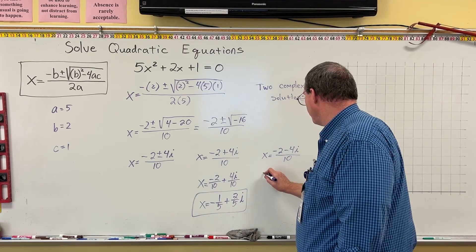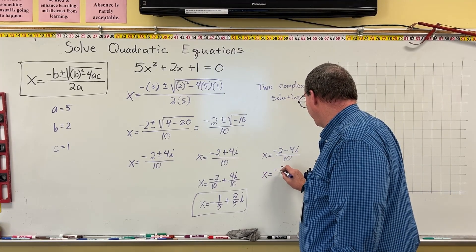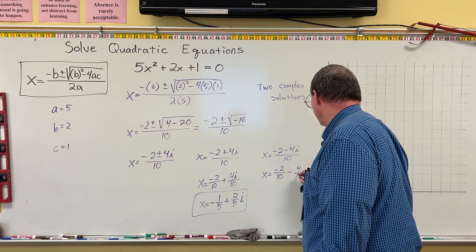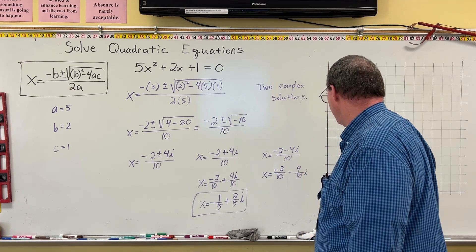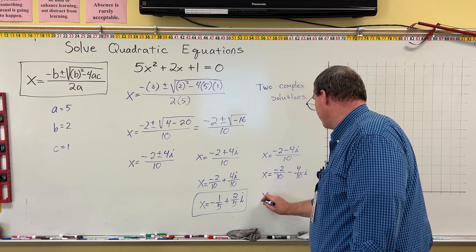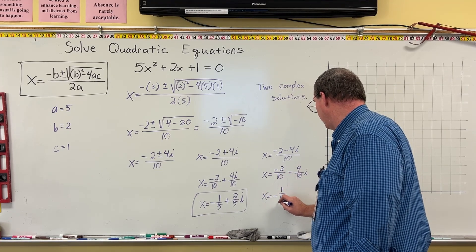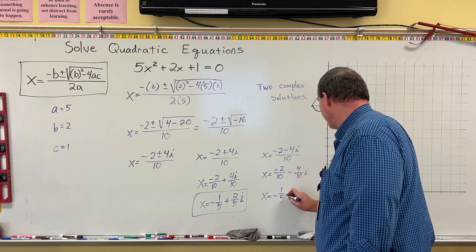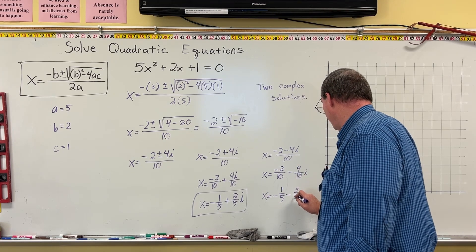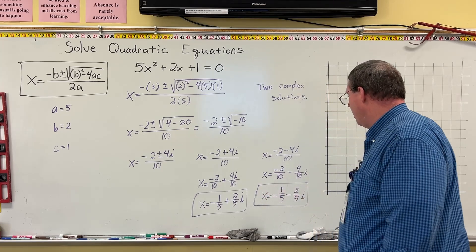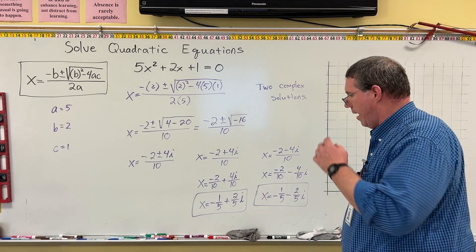This one, we're going to do the same thing. We're going to split it out: negative 2 over 10 minus 4 over 10i. And then x is equal to negative 2 over 10 is the same thing as negative 1 fifth. And then 4 over 10 is the same thing as 2 fifths i. And so our other solution is negative 1 fifth minus 2 fifths i.